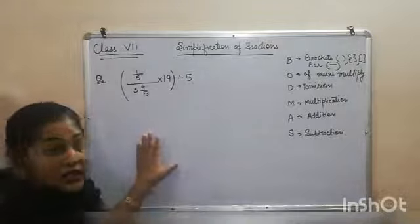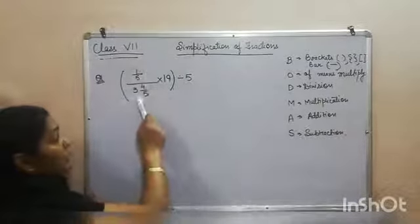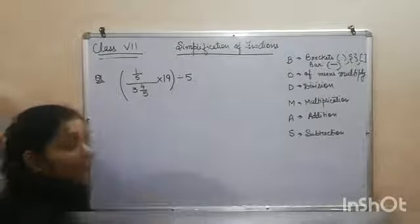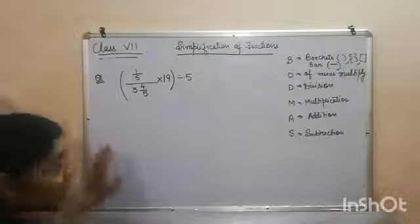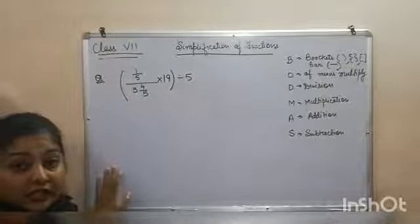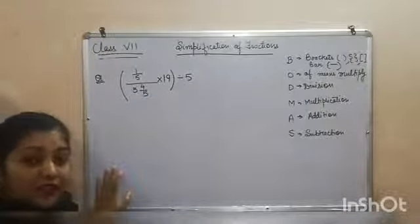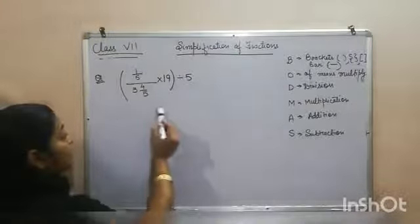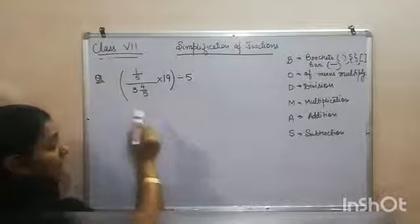So what is there in this expression? 1 by 5 upon 3 and 4 by 5 into 19 divided by 5. Whenever a mixed fraction is given to you, first step we have to do is solve this mixed fraction. Convert it into improper fraction.